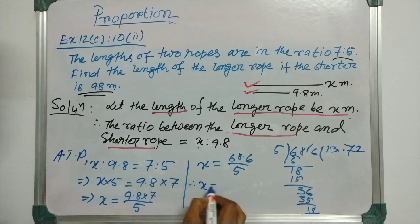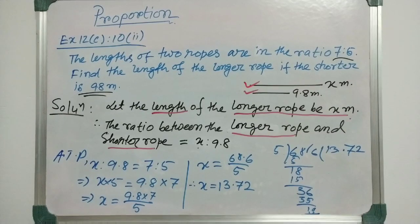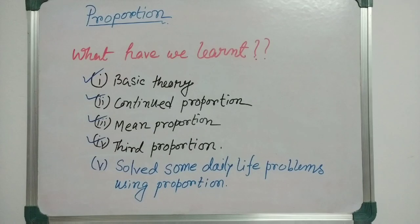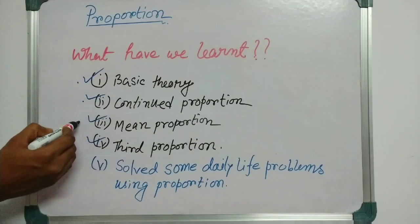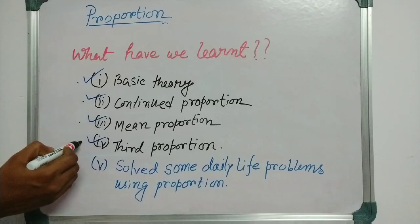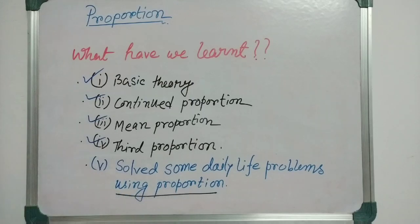Therefore, x equals 13.72 meter. That means the length of the longer rope is 13.72 meter. Students, please be careful about the unit. In this whole chapter, we have learned basic theory of proportion, continued proportion, mean proportion, third proportion, and we have solved some daily life problems using proportion. Thank you for watching this video. I hope this is helpful for you.